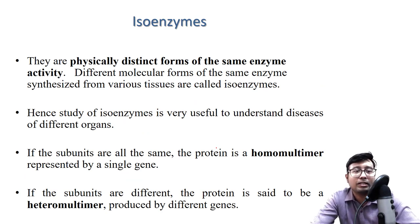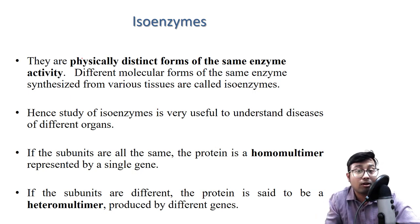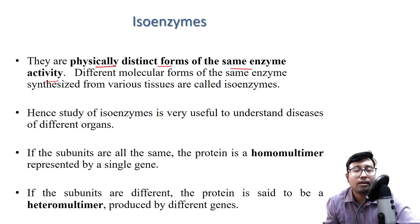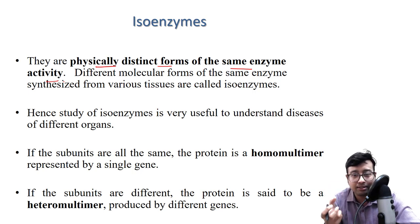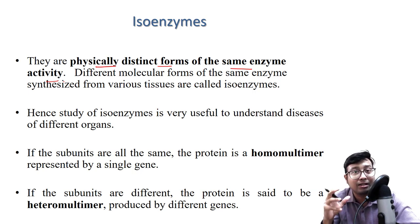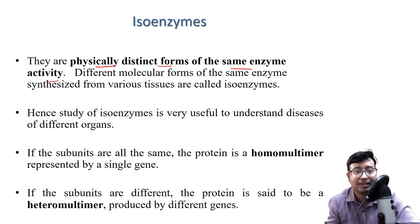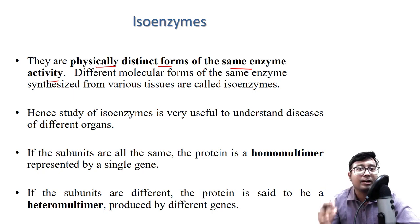The most important thing regarding isoenzymes — how do we define them? They are physically distinct forms of the same enzyme. They are basically the same enzyme but physically different and distinct in their ultra-microscopic structure. They function similarly but are located in different places. This is the main concept about isoenzymes.